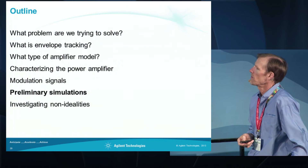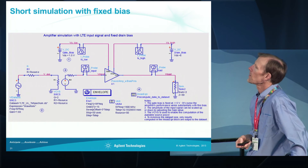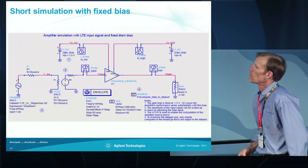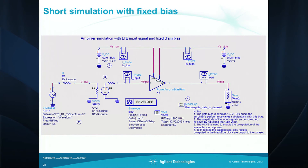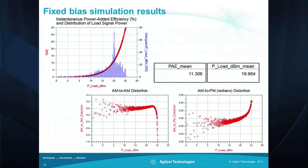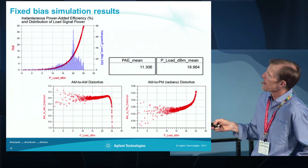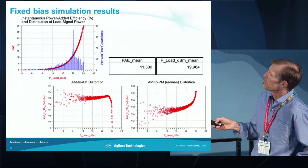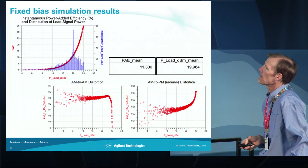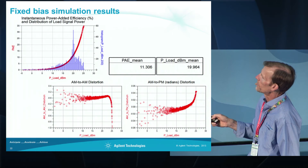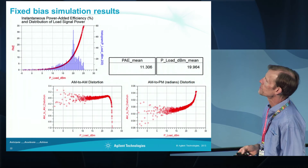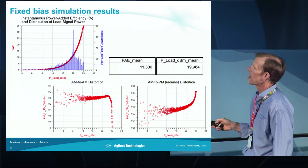It's useful to run a simulation with a fixed drain bias for comparison before applying envelope tracking. This is the modulated input signal, and the simulation results show the power added efficiency in red versus power delivered, with a blue histogram of the modulated output signal. It shows that we're really operating well below the peak of the power added efficiency curve most of the time. This also shows the AM-to-AM distortion and the AM-to-PM distortion.